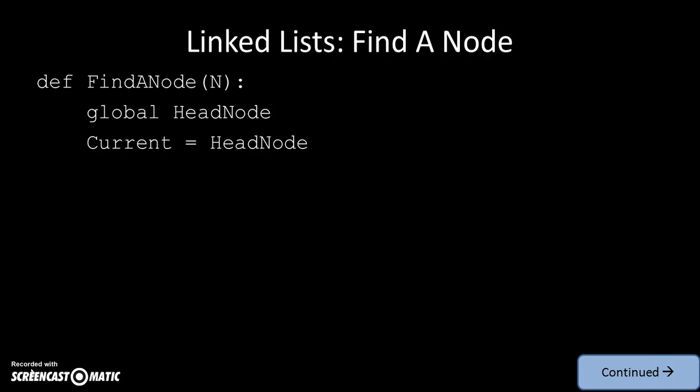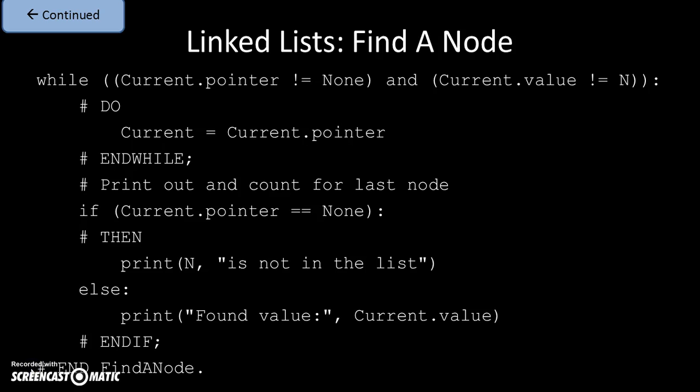How do we find a node within a linked list in Python? This code is on two pages. First we say we're using head_node, and current points to head_node. Our loop has two conditions: as long as we haven't reached the end of the list or haven't found the value we're looking for, keep moving through the list by saying current = current.pointer. When we exit the loop, either we've reached the end of the list — current.pointer will be None, so we print 'value is not on the list' — or we've found the value and can print it out.